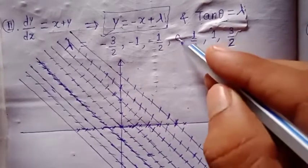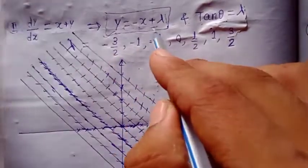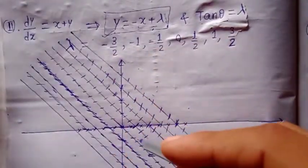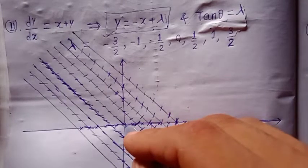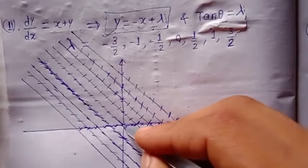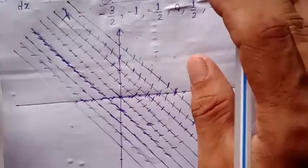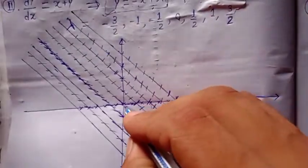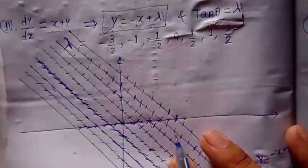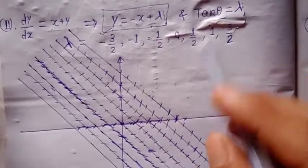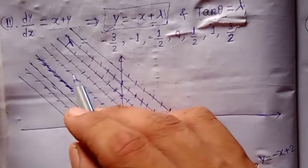For lambda equal to zero, the line is y equal to minus x, which is a line passing through the origin with inclination 135 degrees with the positive x-axis. For this line, tan(theta) equals zero, which means theta equals zero, so the line segments drawn on this isocline will be parallel to the x-axis.